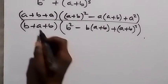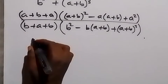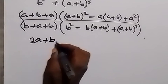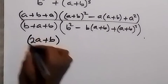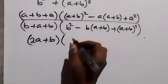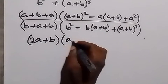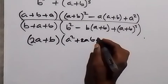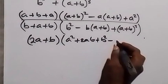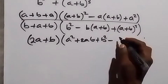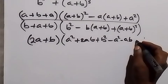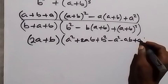In the next step, we can simplify. We have a plus a, that will give us 2a, then plus b, then into bracket — expanding a plus b squared — that will be a squared plus 2ab, then plus b squared. Then we use a to expand further: we have minus a squared, minus ab, then plus a squared.